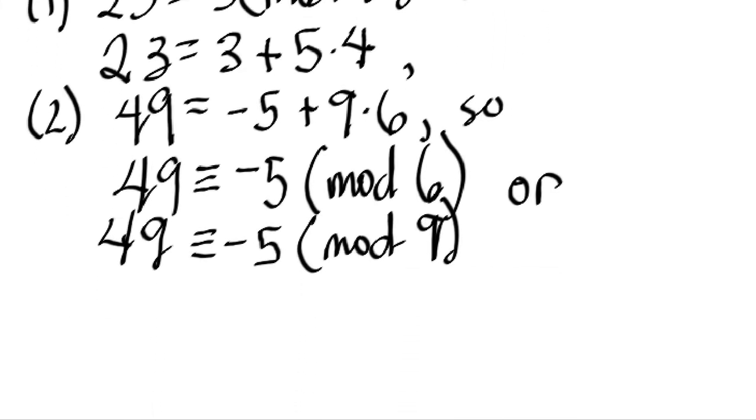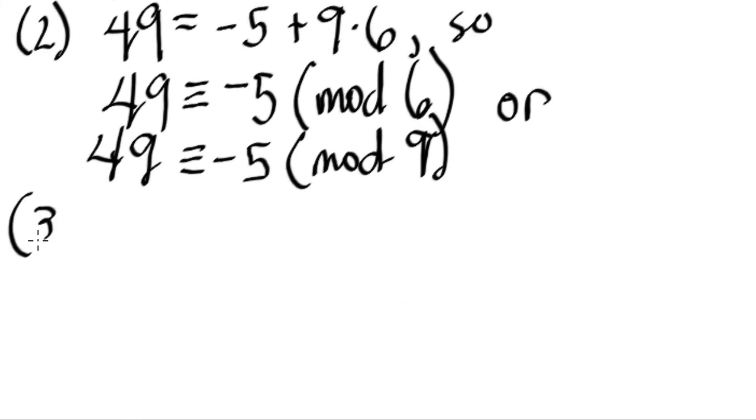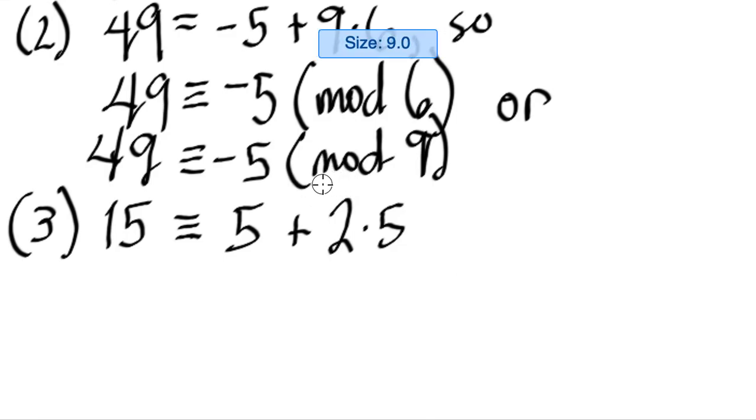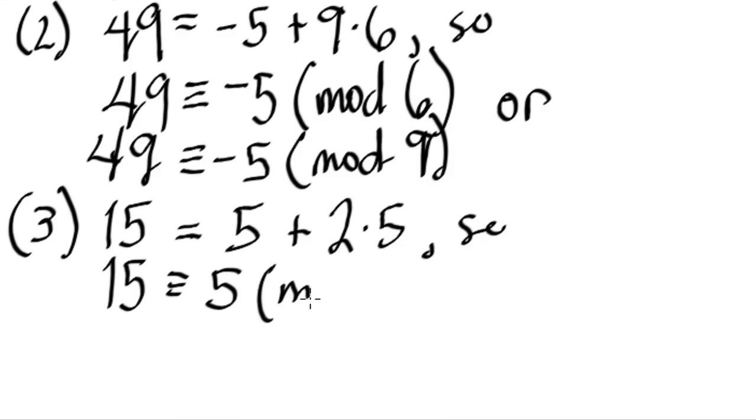One more example. Let's make it simple, let's make it 15 is equal to 5 plus 2 times 5. You know, this is true. Let's erase the congruent symbol. It should be equal. 15 is equal to 5 plus 2 times 5, because 5 times 2 is 10, 10 plus 5 is 15. So therefore, we can say that 15 is congruent to 5 mod 5.